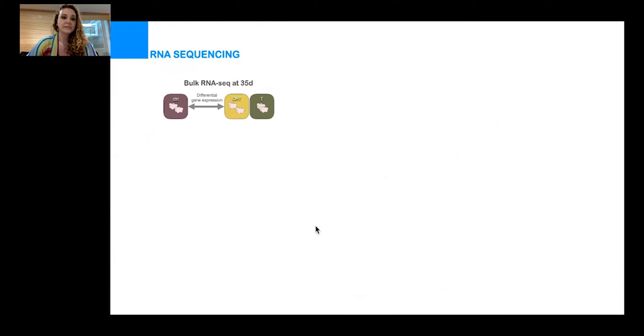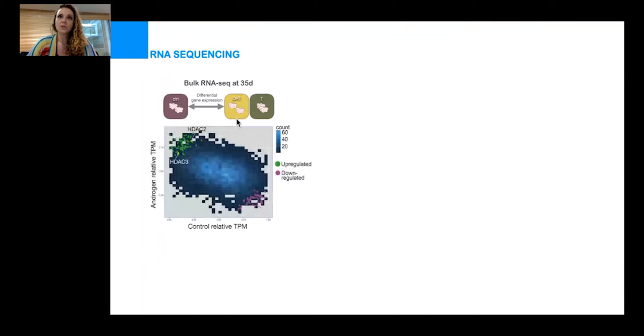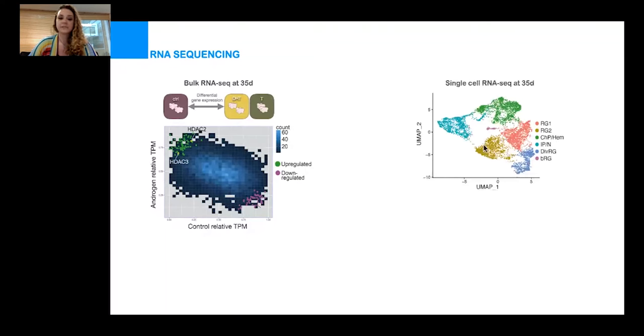In order to understand the transcriptional differences that lead to this androgen-induced phenotype, I did RNA-seq at 35 days, and we were interested in differentially expressed genes between control and androgen. Among the genes upregulated in androgens were two HDACs, or histone deacetylases. To look at transcriptomic changes from a different angle, we performed single-cell RNA-seq at the same stage, at 35 days.